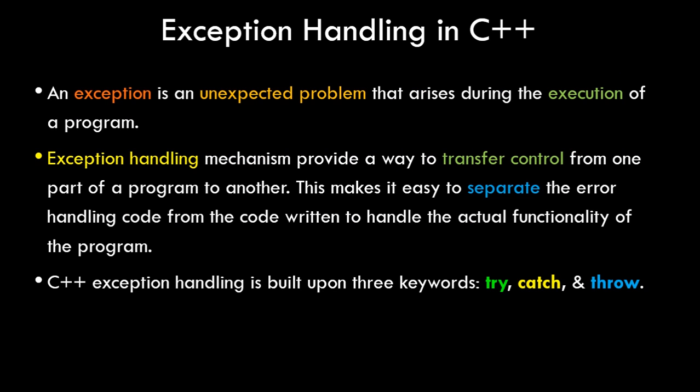So what exactly is an exception in a program? An exception is an unexpected problem that arises during the execution of a program. It may happen that sometimes you have syntactically written the program correctly, meaning the compiler compiled it correctly, however during execution there might be some errors that come at runtime and at that time the program crashes. These kinds of issues are known as exceptions.